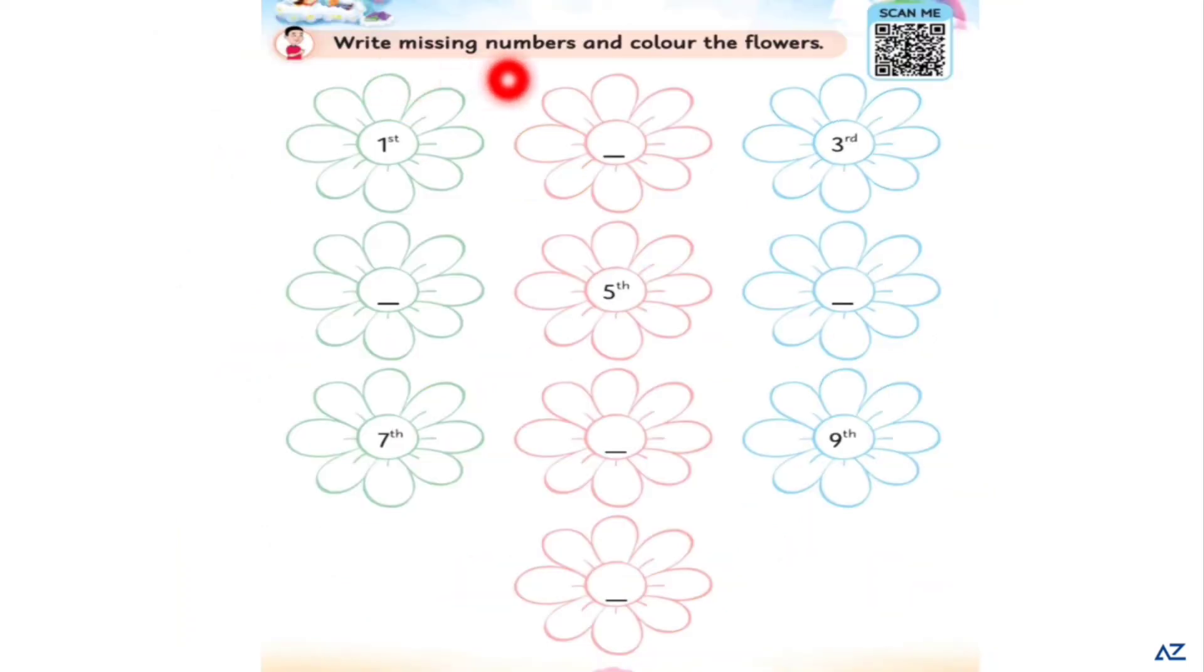Now dear kids, write missing numbers and color the flowers. 1st, 2nd, 3rd, 4th, 5th, 6th, 7th, 8th, 9th and 10th. After writing the missing numbers, dear kids, you will color the flowers.